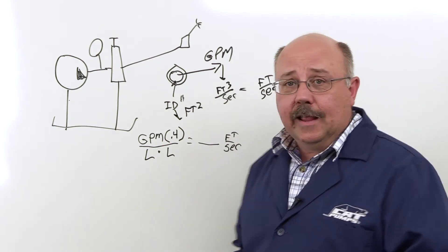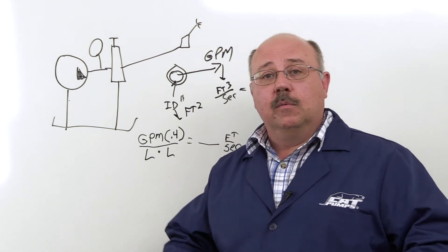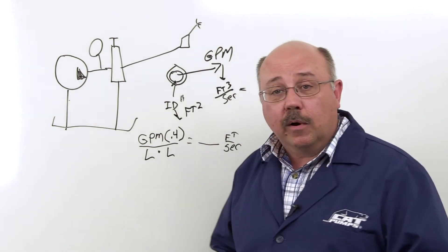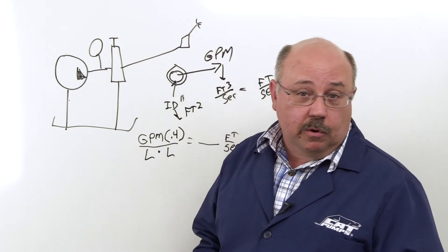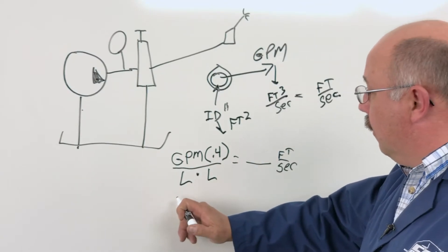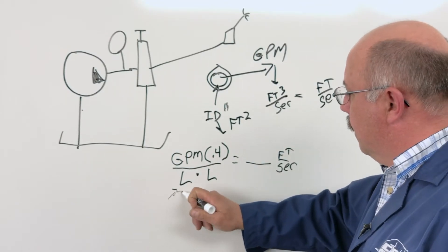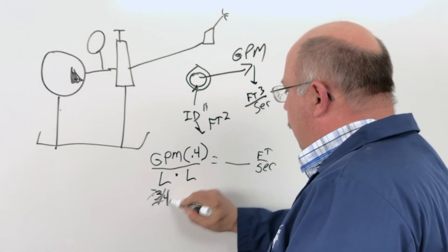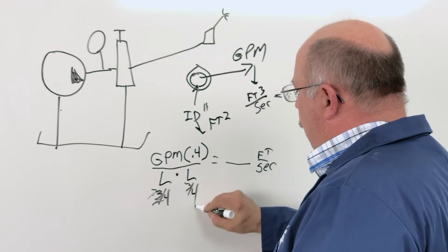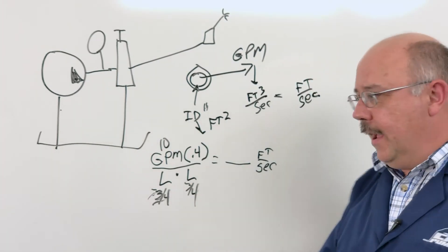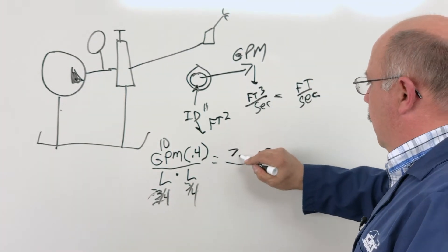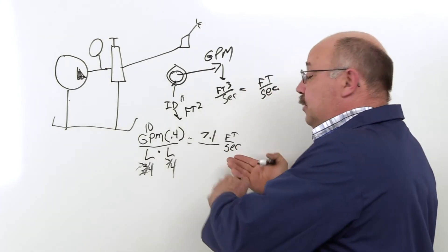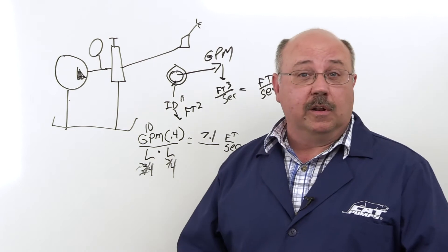So let's say we're running a 10-gallon-a-minute system. We've got a 1050 pump on there. It's got a three-quarter inch inlet port. So let's start with the three-quarter inch line. And we throw three-quarter into here, three-quarter into here, three-quarter into there, 10 up there. We do all the math. We come out with 7.1 feet per second. That's much more than four feet per second, which is what our target was.